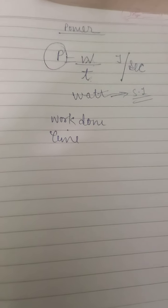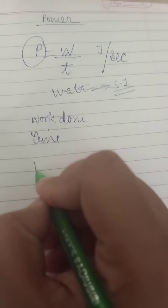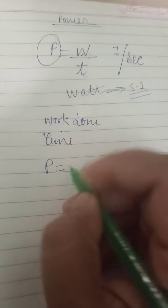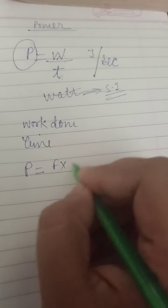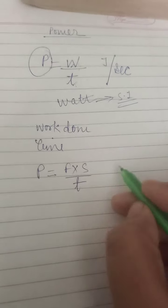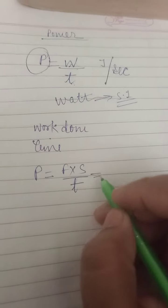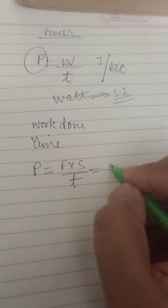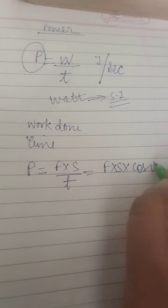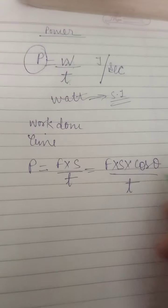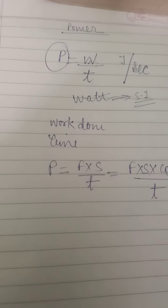As we know, if the work is done at an angle, then its formula changes, and with that the formula of power also changes. Generally, power is equal to W/T or F×S/T. But if the work done is at an angle, then we get power by the formula F×S×cosθ / T.